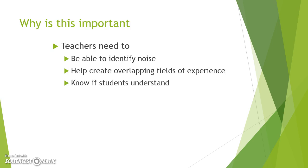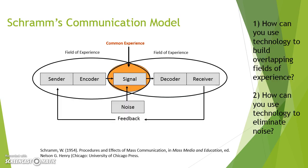We have to check in with students and be sure they are understanding what we're actually doing. There are several ways we can use Schramm's communication model when thinking about integrating technology into lessons. We can think about how to use technology to build overlapping fields of experience — I've given you some examples like showing a video. We can also use technology to eliminate noise, and we'll be talking about this more in the future when we discuss universal design for learning — thinking about whether there's a way to eliminate noise by encoding that message in a different and better way.